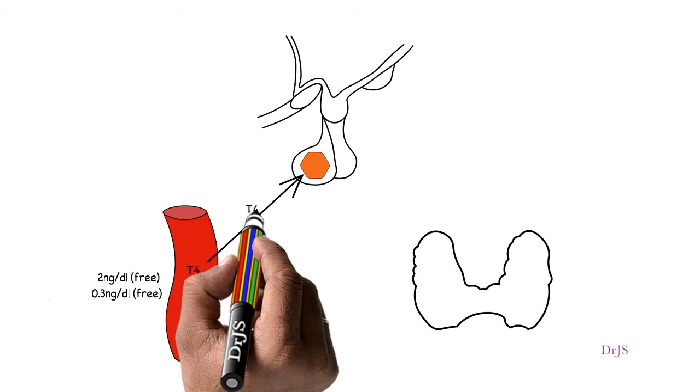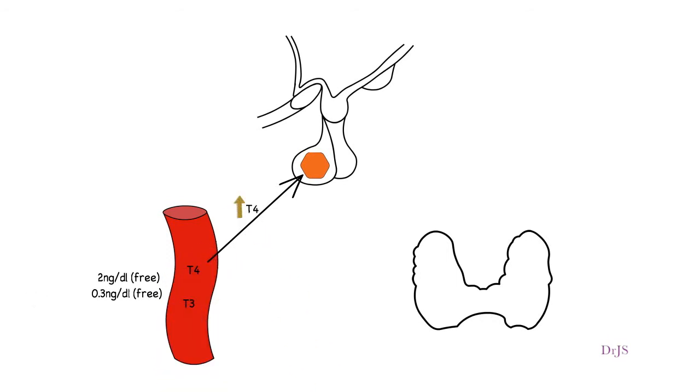If there are conditions in which there is increased concentration of free T4 hormone, this increased concentration of T4 inhibits the hypothalamic nuclei, especially the paraventricular nucleus, which releases TRH.